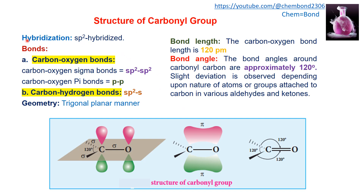The carbonyl group is sp2 hybridized, since carbon and oxygen form a double bond. The bonds are of two types: the carbon-oxygen bond and the carbon-hydrogen bond. The carbon-oxygen bond is further divided into two categories. First is the carbon-oxygen sigma bond, which is formed by the linear overlapping of the sp2 hybrid orbital of carbon with the sp2 hybrid orbital of oxygen.